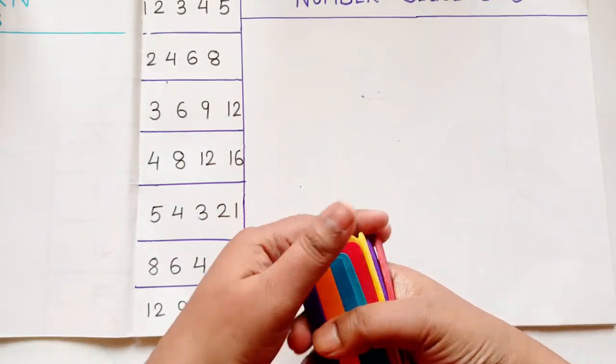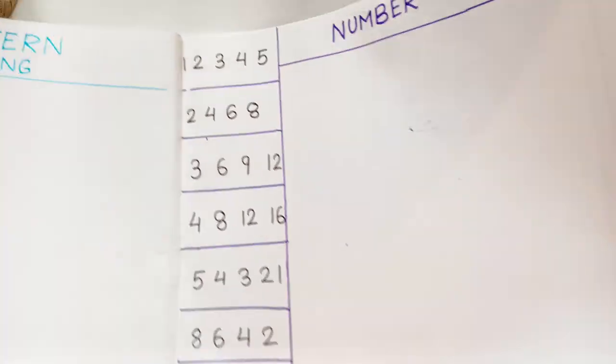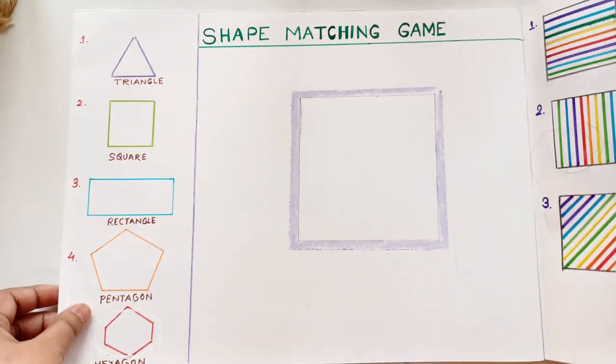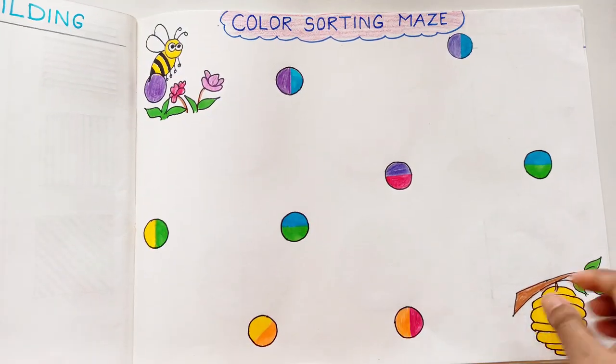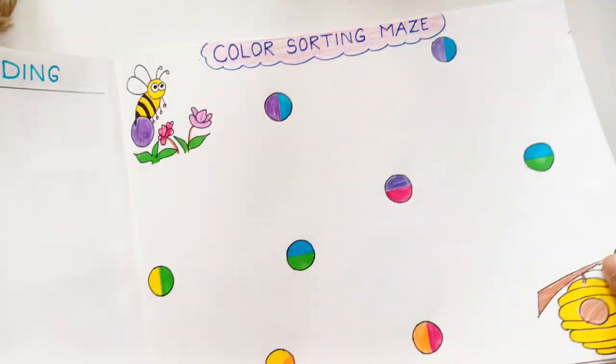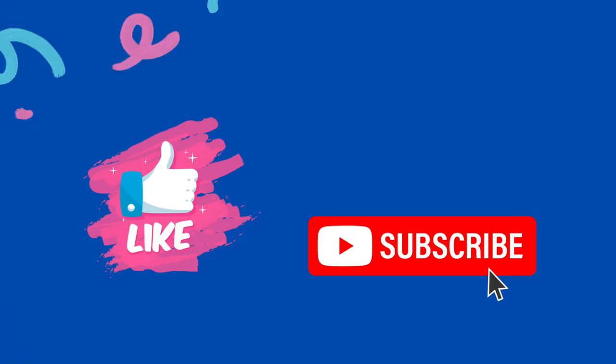So these were the five brain-boosting activities using simple materials like ice cream sticks, paper, and sketch pens. Try these at home and let us know how your kids enjoy them. Don't forget to like, share, and subscribe for more fun and educational content. I'll see you in the next video. Bye bye, Allah Hafiz.